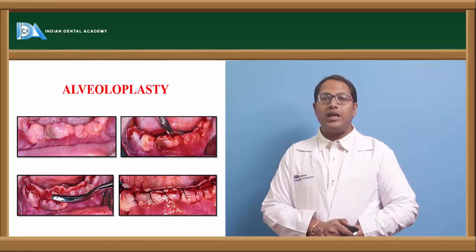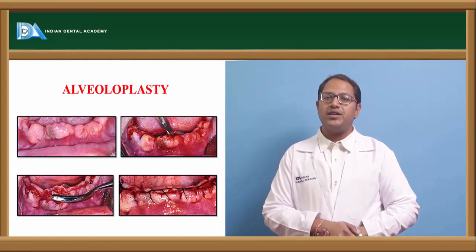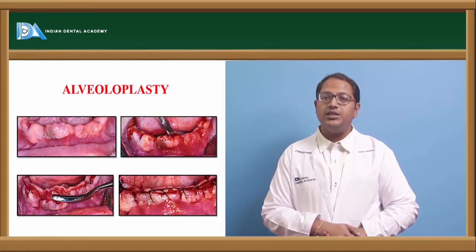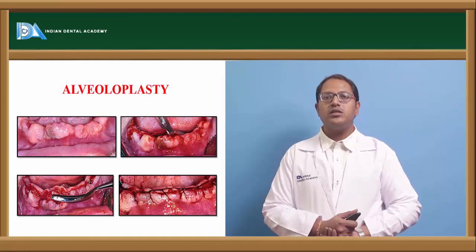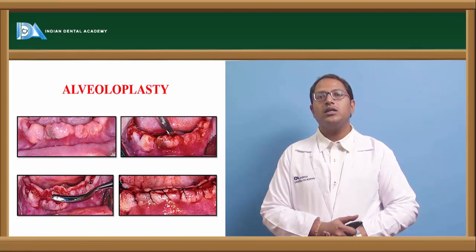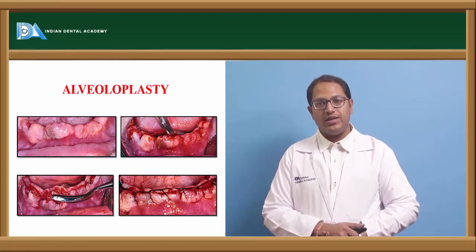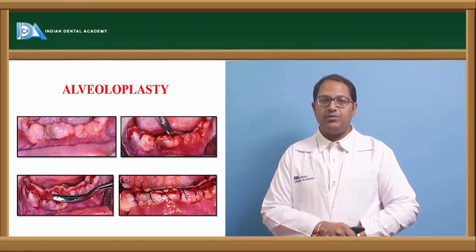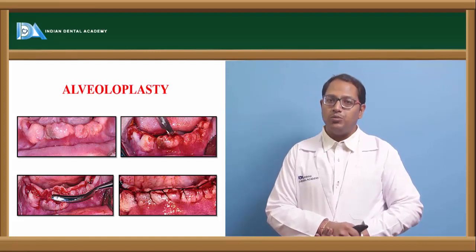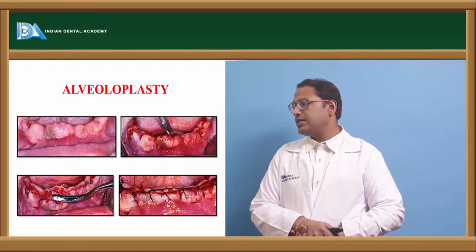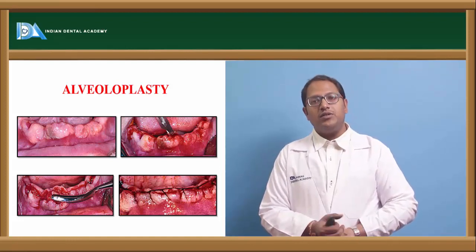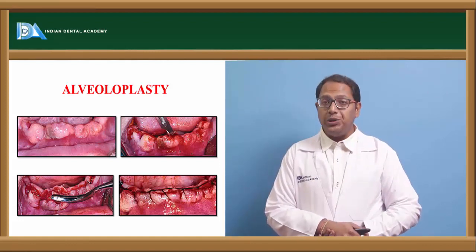Alveoloplasty is further classified into primary and secondary alveoloplasty. Primary alveoloplasty is done during extraction — immediately after extraction, we take the rongeur and press out the socket, recontouring it to the original size, because during extraction the buccal or lingual side may be elaborated. Whichever side is elaborated, we recontoure it back to the original position. If there are any sharp spicules left over, we remove them with a bone file. This is called primary alveoloplasty.